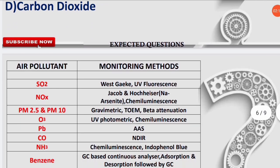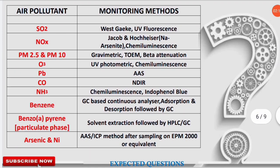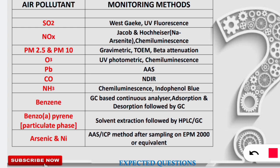I want to cover the air pollutants and their monitoring methods. For sulfur dioxide (SO₂), the West Gaeke method and the UV fluorescence method are both used — remember both. Next, oxides of nitrogen (NOₓ) are monitored using the Jacob and Hochheiser method, also known as the sodium mercurate method, and also with the chemiluminescence method.